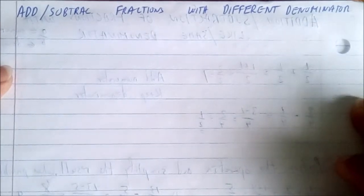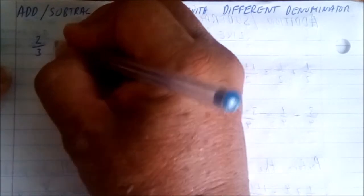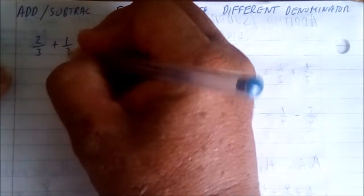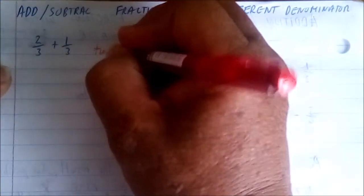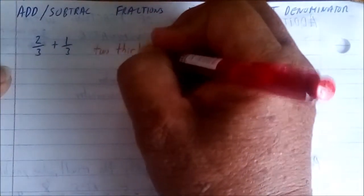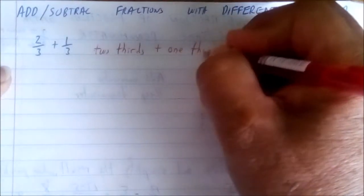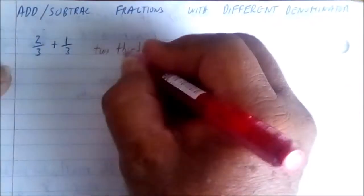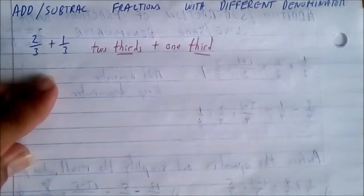For example, if I have two thirds plus one third, this is read as two thirds plus one third. Notice the word third and third are the same, so it means in this case both of them are the same.